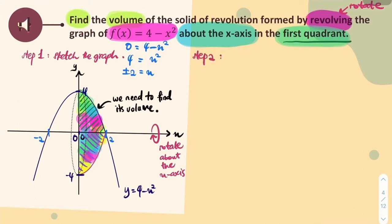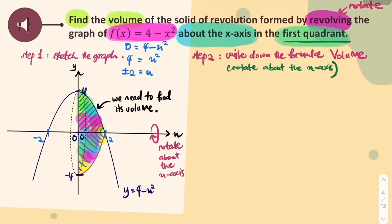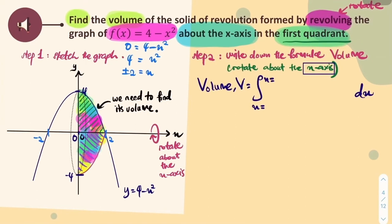Step 2: Write down the formula of the volume where the graph rotates at the x-axis. Volume is equal to an integral. Focus on the word x-axis, therefore you know the integral is involving the limit of x with dx. The limit is from 0 to 2. That is our region. You must put pi and also square, and in the middle there is your y-function.